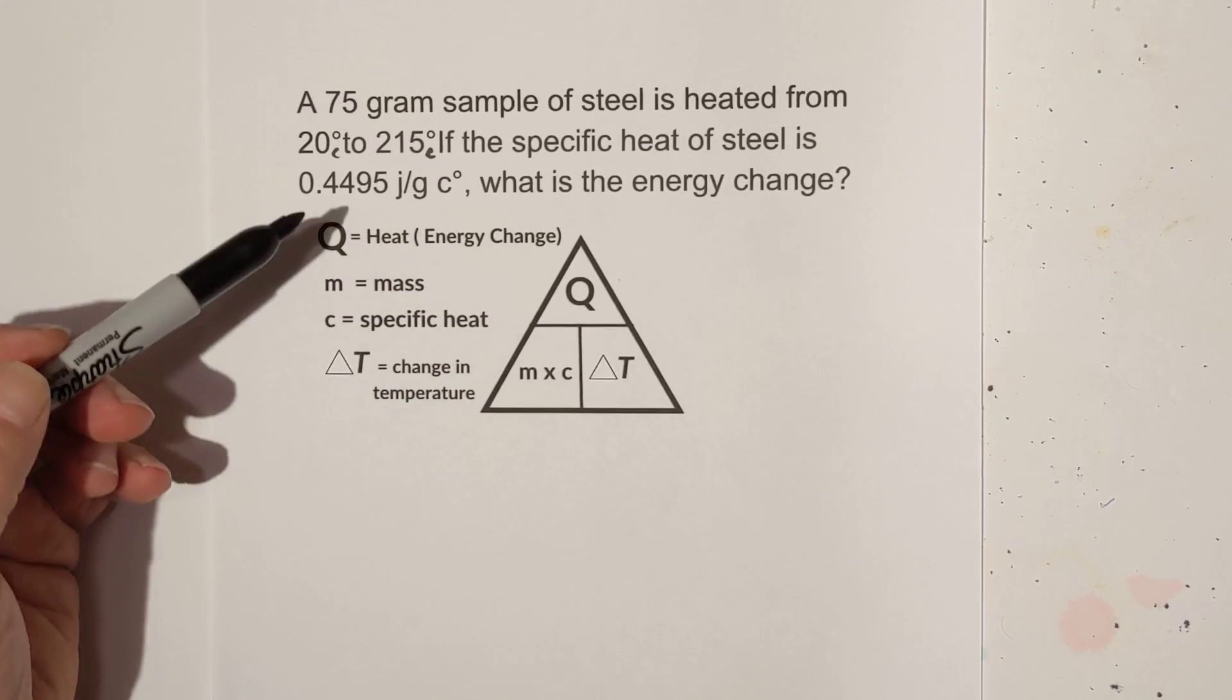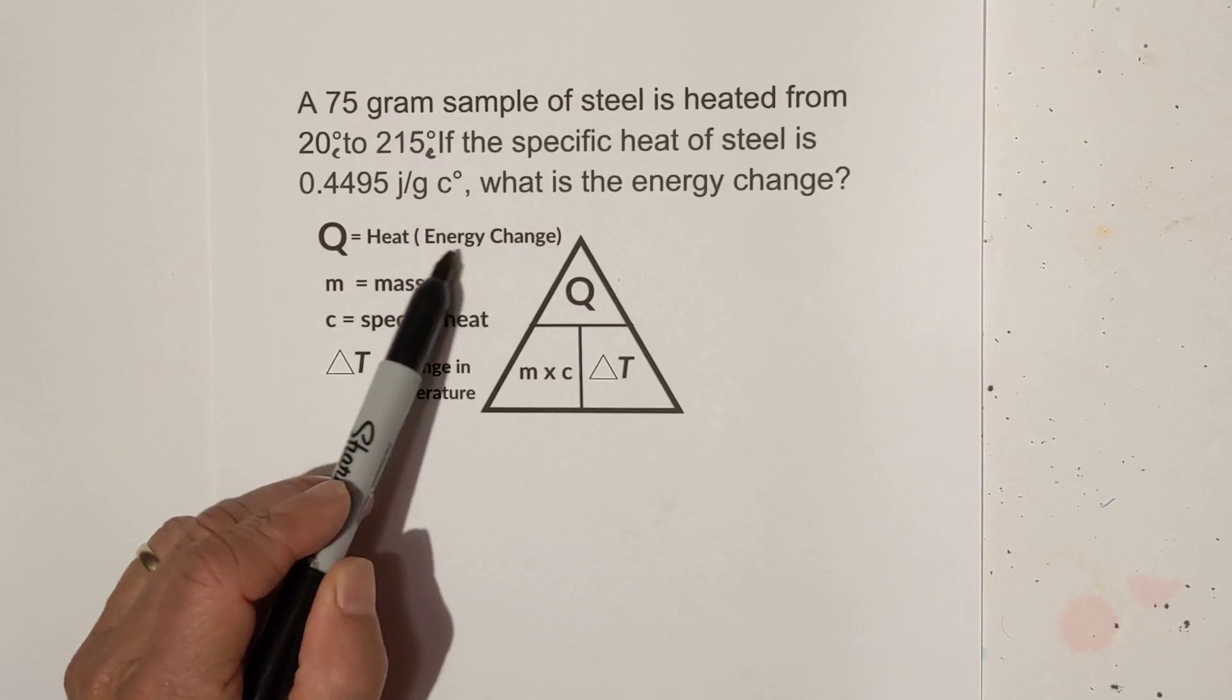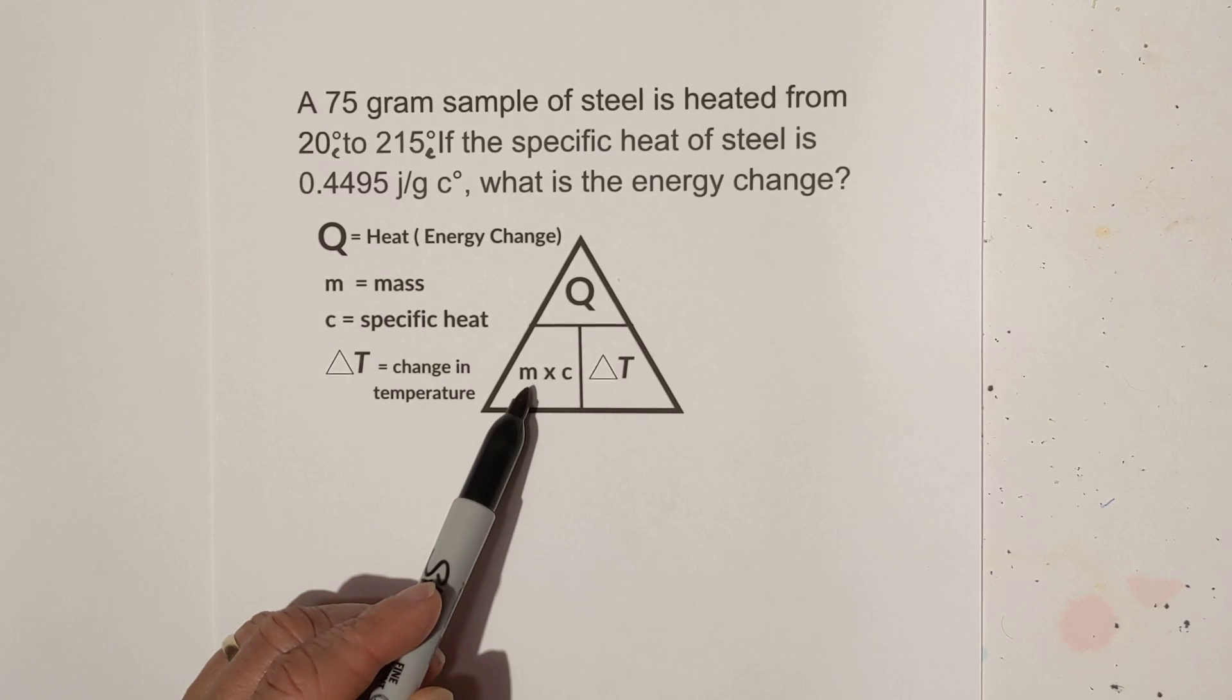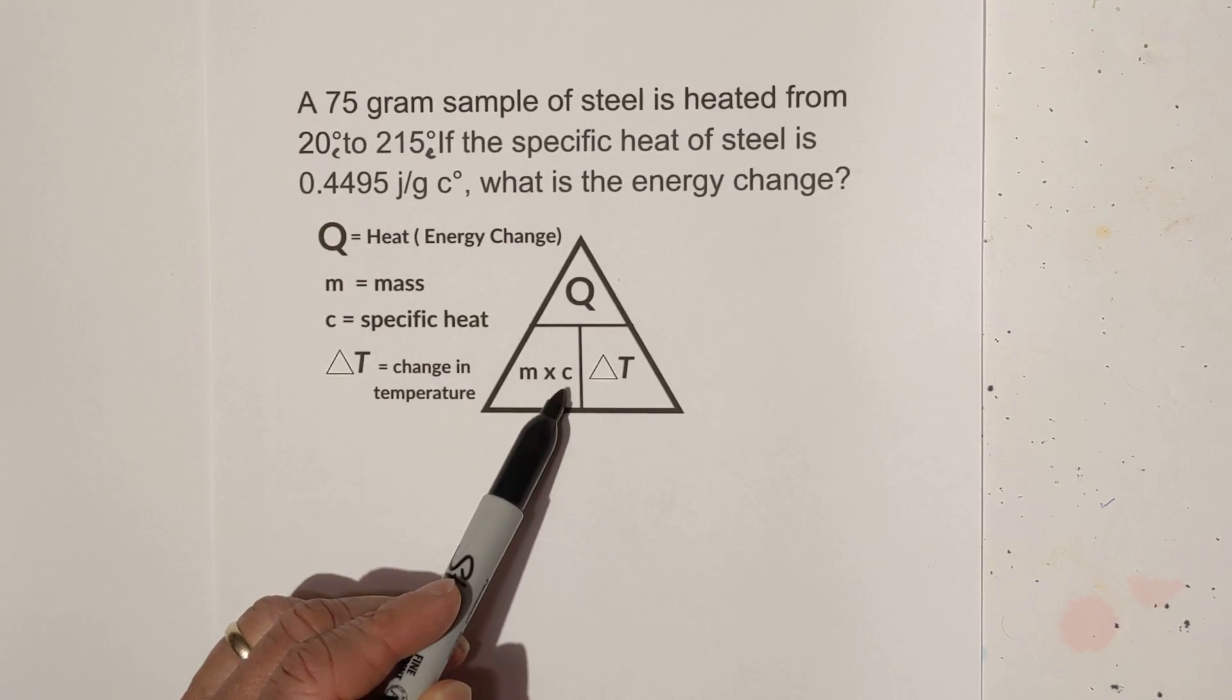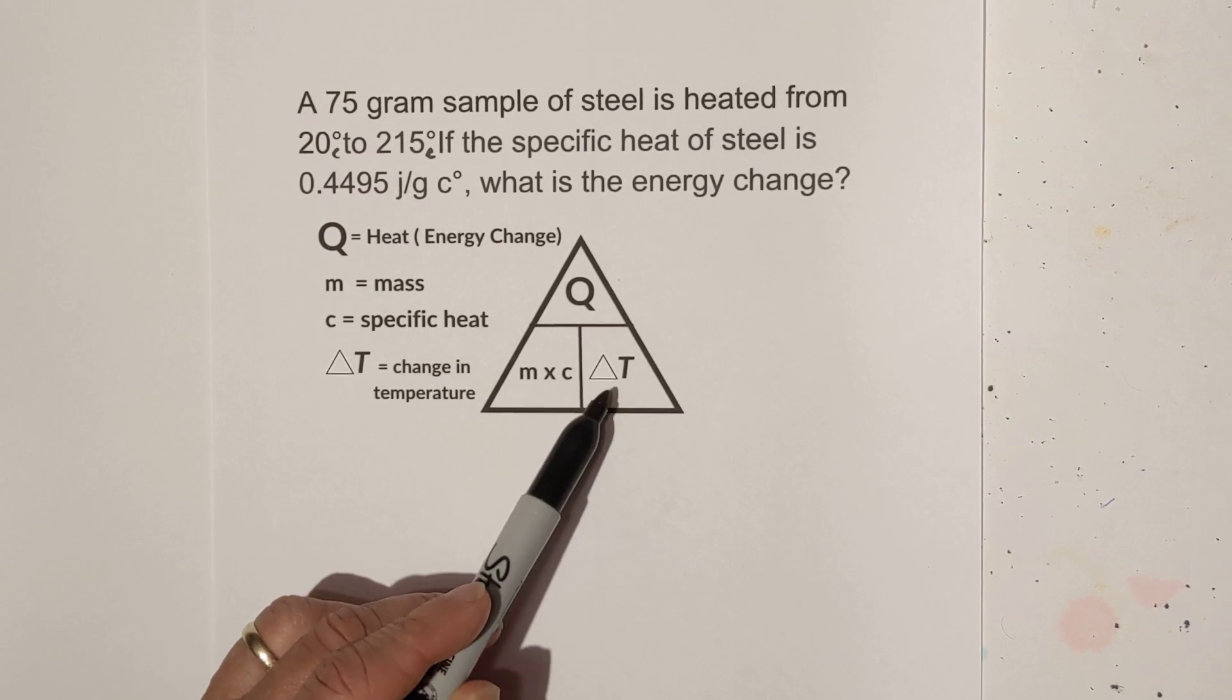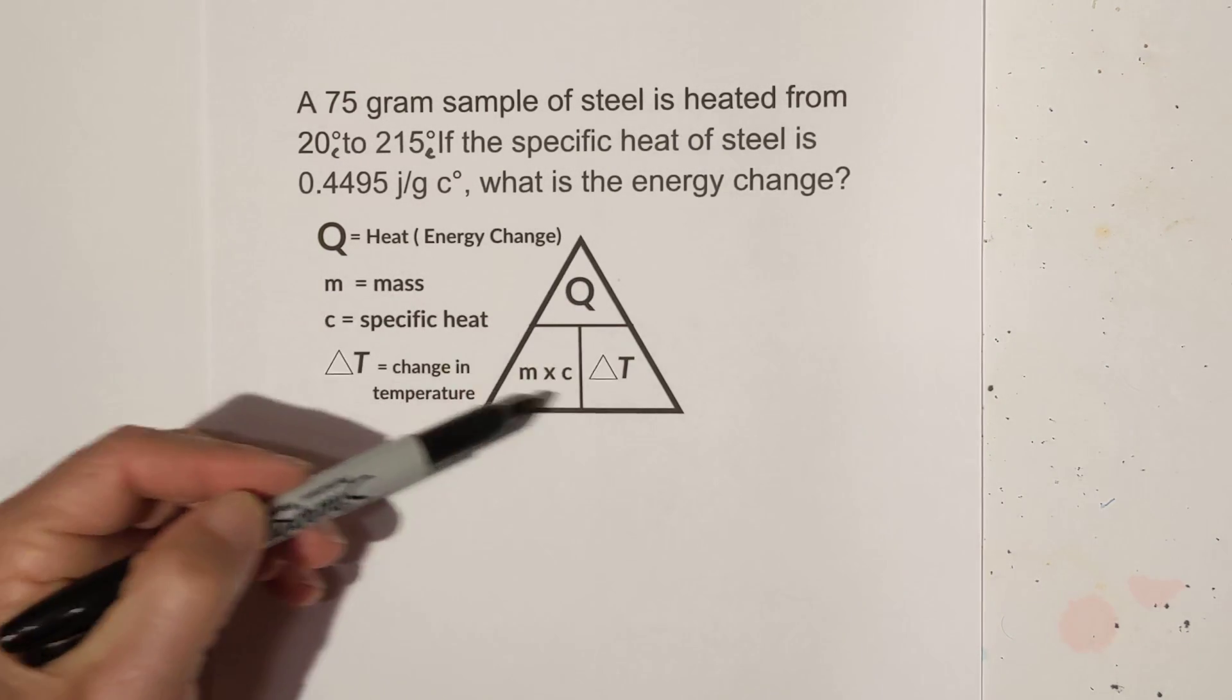I like to use this triangle. Q represents heat or energy change. You may see it either way. In this box you have mass times specific heat and then this is change in temperature.